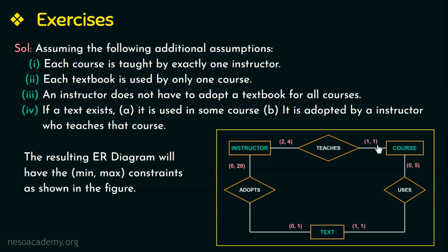In the question it is given that each course may or may not use a textbook, therefore a partial participation represented as 0, and a course can use up to 5 textbooks, so the maximum value is 5. All textbooks are defined or written for some course — therefore total participation — and as assumed each textbook is used by only one course, so the maximum value is 1. The min-max constraint for the text entity type in the relationship uses is (1, 1).